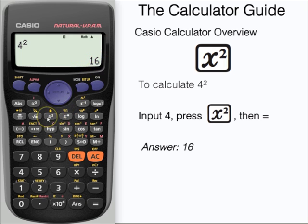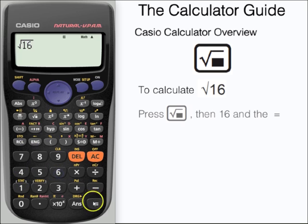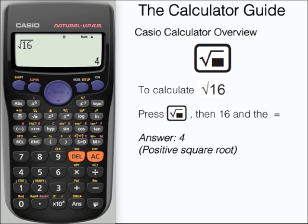Next to the x-squared button is the square root button. We're going to use that now to calculate the square root of sixteen. Press the square root button, input sixteen and press equals. And here's our answer four which is the positive square root of sixteen.